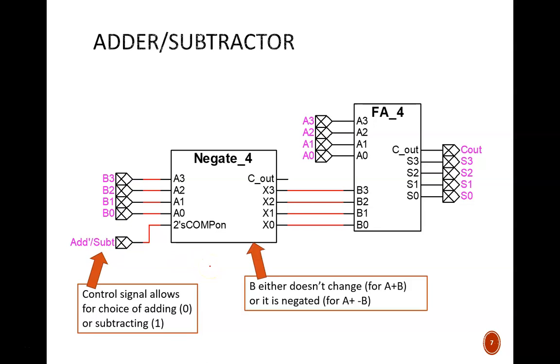As discussed in the negator lesson, this B value will be unchanged if the control equals 0, or it will be negated if the control equals 1. Whatever the choice, those four bits are then added to the A value to produce the final result. In short, the circuit performs either A plus B or A plus negative B.